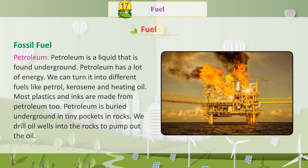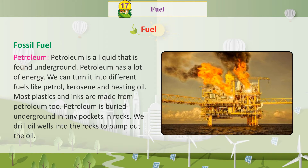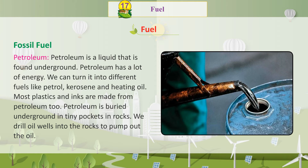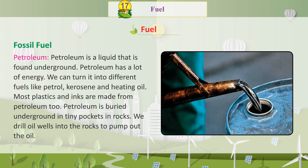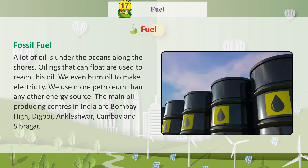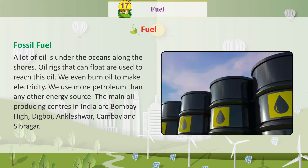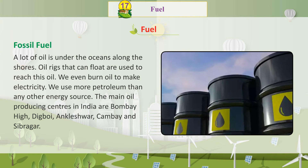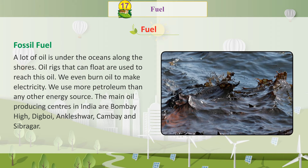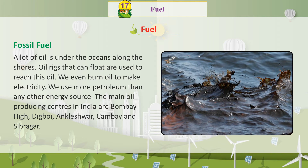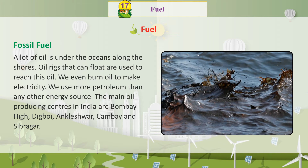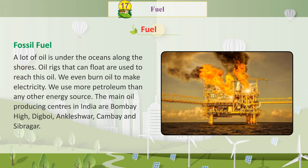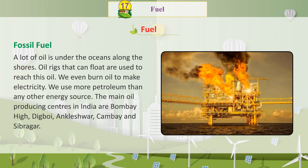Petroleum is buried underground in tiny pockets in rocks. We drill oil wells into the rocks to pump out the oil. A lot of oil is under the oceans along the shores, and oil rigs that can float are used to reach this oil. We even burn oil to make electricity. We use more petroleum than any other energy source.